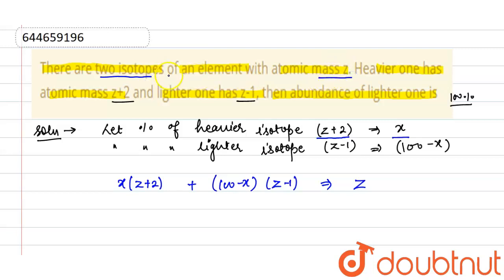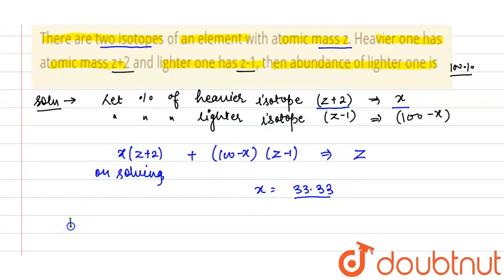mass z, meaning both isotopes overall have atomic mass z. So it will be equal to z. Now on solving we get x = 33.33. So the percentage of the heavier isotope, or the abundance of the heavier isotope, equals 33.33%. Now we can calculate the percentage